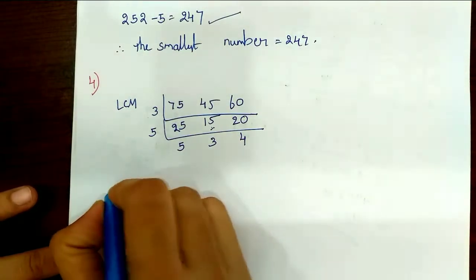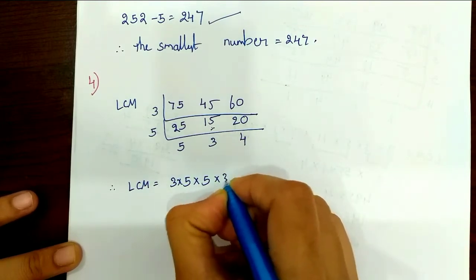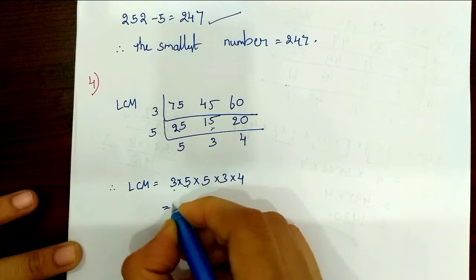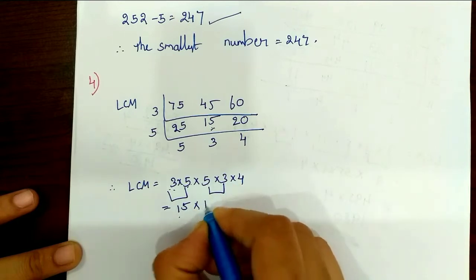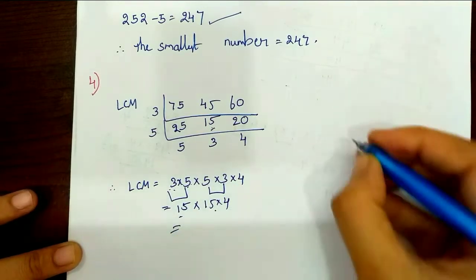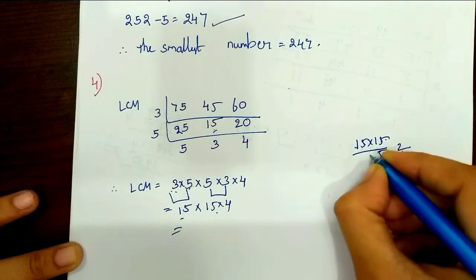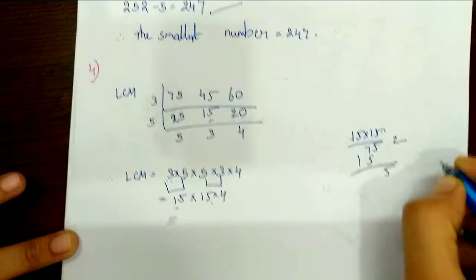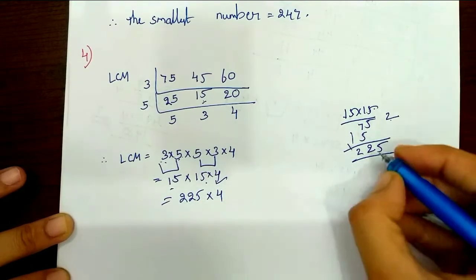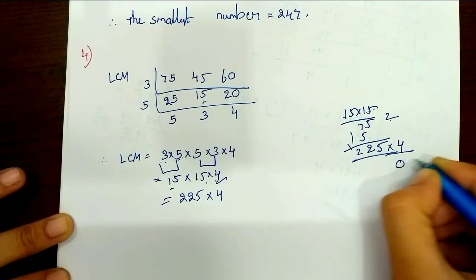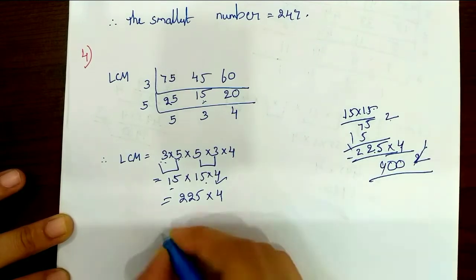So LCM equals 3 × 5 × 5 × 3 × 4. Calculating: 3 × 5 = 15; 5 × 3 = 15; then 15 × 15 = 225; 225 × 4 = 900. Total LCM is 900.